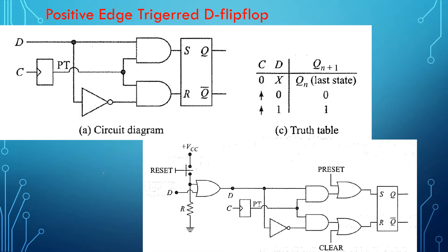In this video session we will be studying two more flip-flops: the D flip-flop and the JK flip-flop. As we know, the problem with the SR flip-flop is when inputs S and R are both equal to 1, the output will be undefined — in an illegal state. As a solution to this problem, they came out with a flip-flop called the D flip-flop, or D-latch.